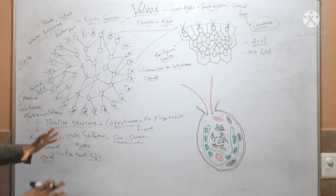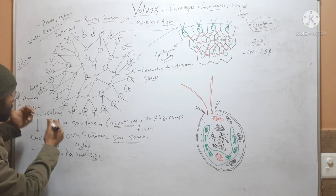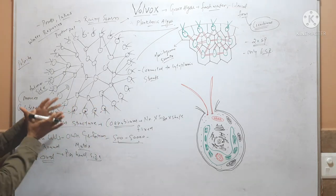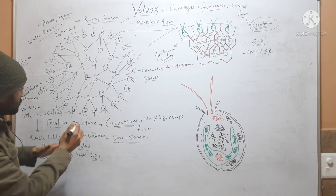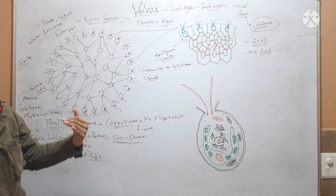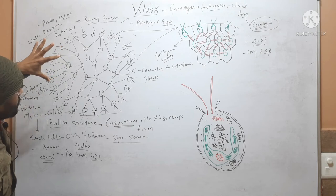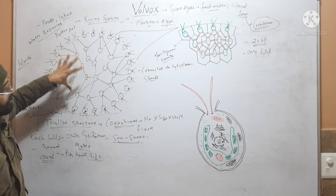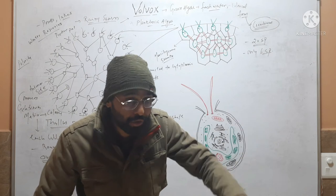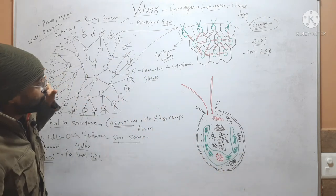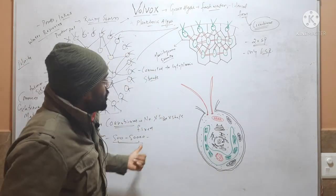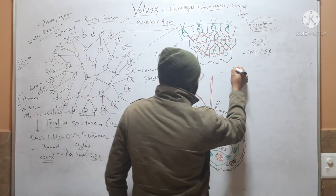Because the eyespots towards the anterior side are larger, the flagella on the anterior side control the movement of the colony. This is the coenobium colony organization found in Volvox.